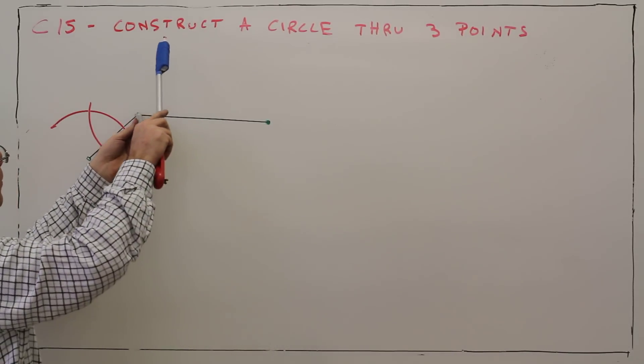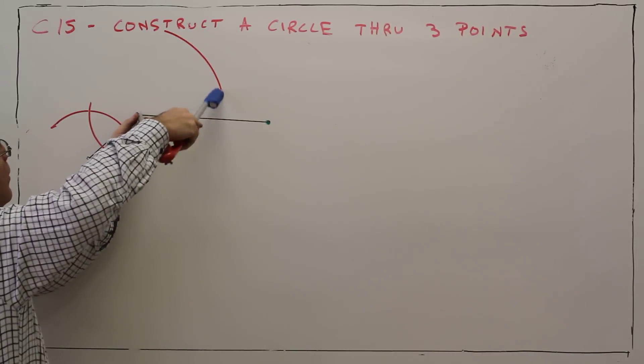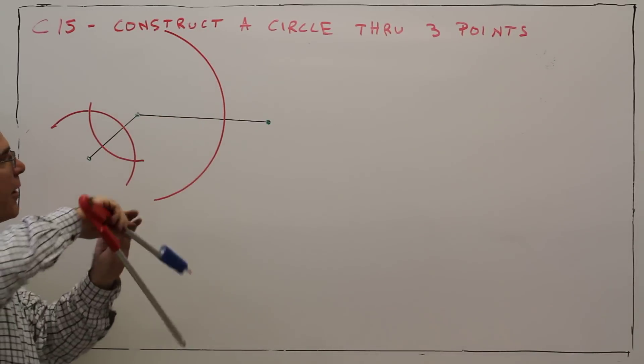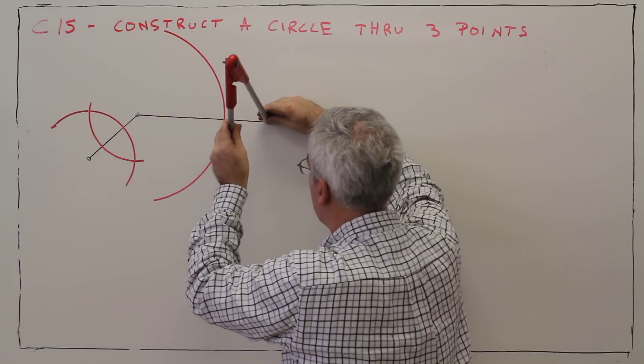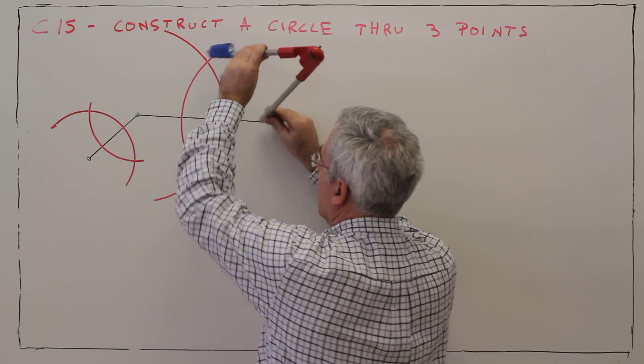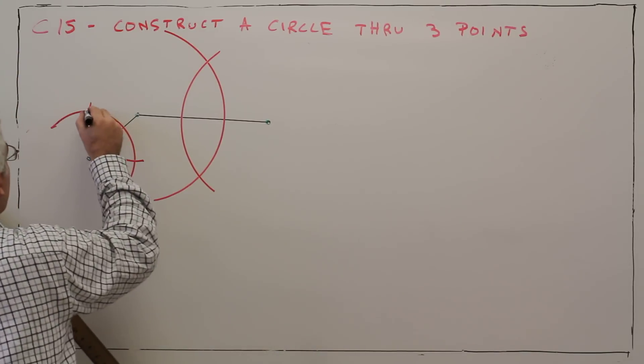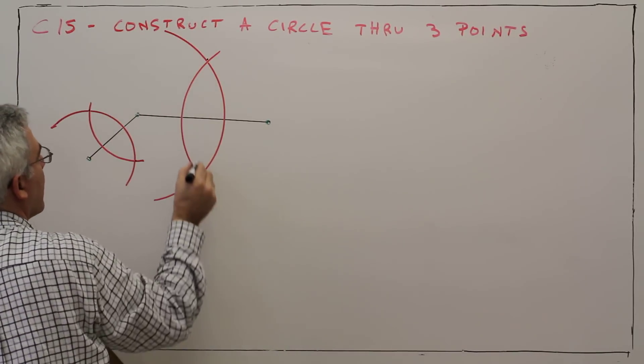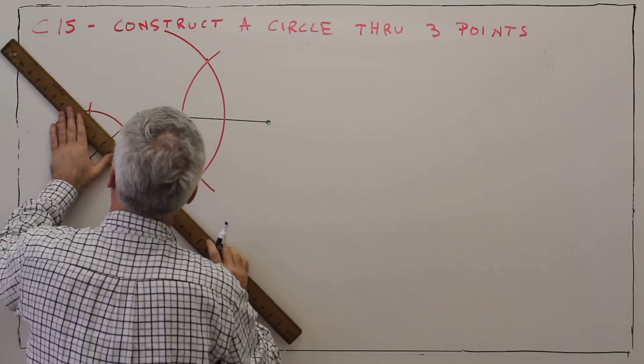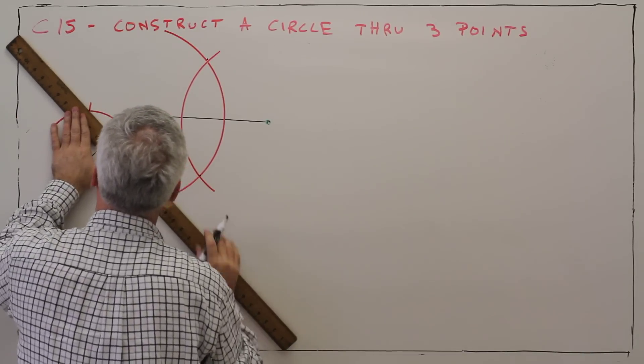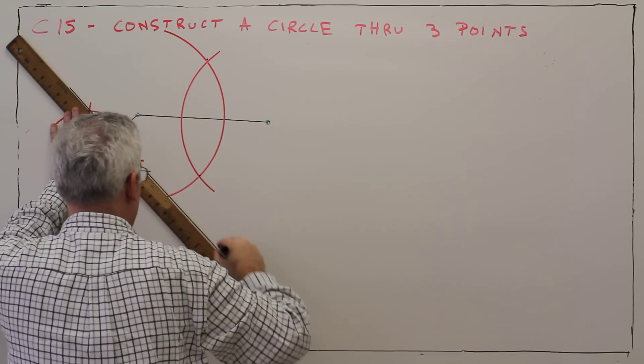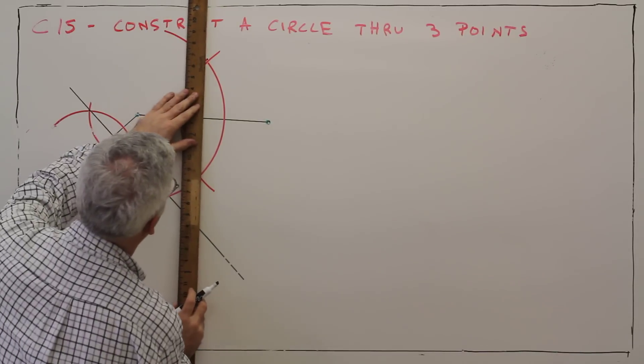I'll go like that. Arc like such. Arc like such. I've got my two points. Create this perpendicular bisector. Create this perpendicular bisector.